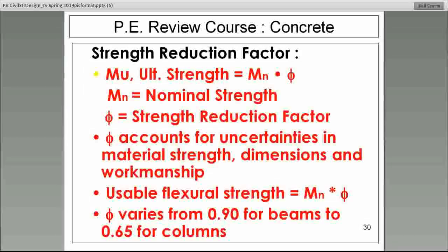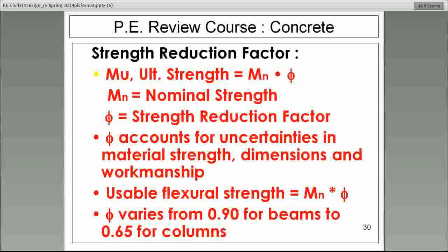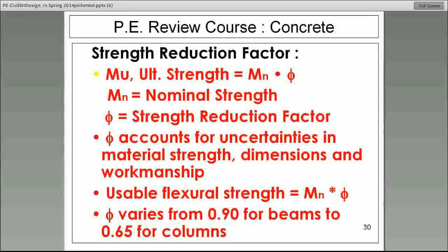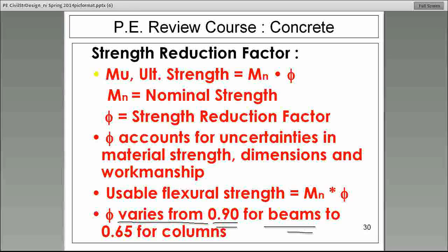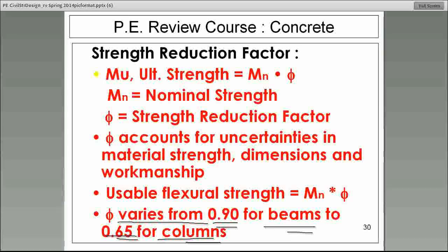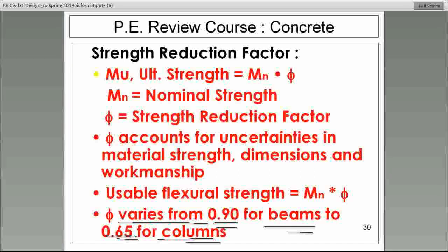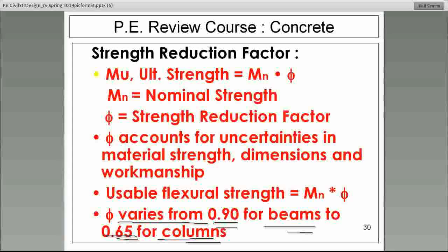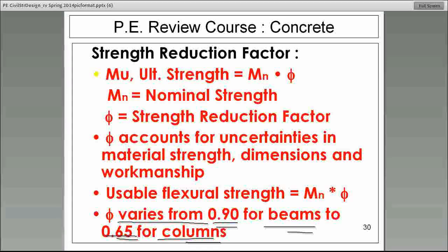It is 0.9 if the element that we are looking at is a beam. All right? Now, here, this slide shows some of the things that I just described to you. However, what I need to do is bring to your attention the bottom, this very bottom line, the very last line. It says phi varies from 0.9 for beams to 0.65 for columns. All right? So the phi factor varies. And this is all dictated by the design code. And if it is a beam, it's 0.9. But if it's a column, it's 0.65. It's a higher reduction because columns are much more critical elements than beams are.